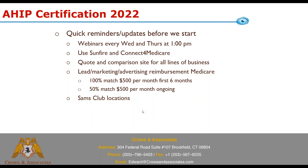A quick reminder about our lead program. We have a program available to all agents who have their Medicare contracts with us. They will reimburse agents for leads, marketing, advertising — anything to generate Medicare sales. It's a 100% match for the first six months you use it, up to $500 per month. Thereafter, for any agent regardless of how long they've been with us, it's a 50% match, still up to $500 paid per month.